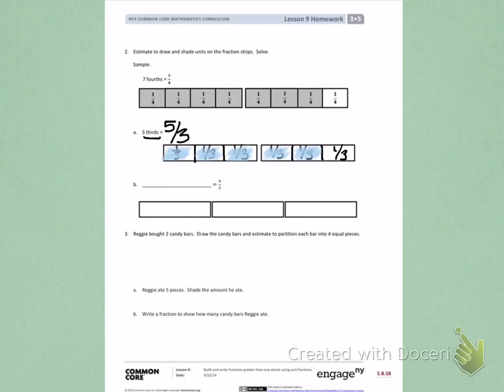Letter B. I see I have 9 thirds. So again, I need to partition each whole into thirds by carefully estimating to divide and partition into equal parts. Then I will label each section as 1 third, since that is my unit form. Again, these are not ninths because there are 9 parts. They are still thirds because each whole is divided into thirds.